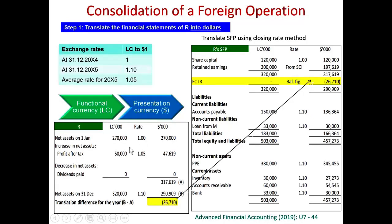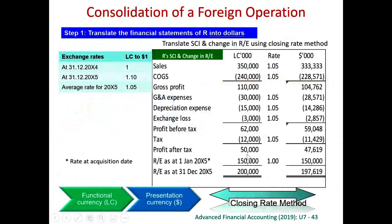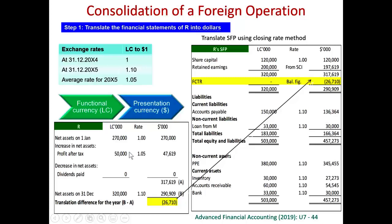Net assets increased from 270 to 320 because of profit. The profit after tax of 50,000 was translated at the average rate, giving $47,619. So if nothing else happened, the closing net assets should be $317,619. However, since assets and liabilities must be denominated in functional currency and translated at the closing rate of 1.1, the actual closing net assets is 320,000 LC divided by 1.1, which equals $290,909. Therefore, net assets must be written down, resulting in a debit to the translation reserve.